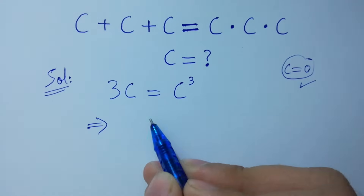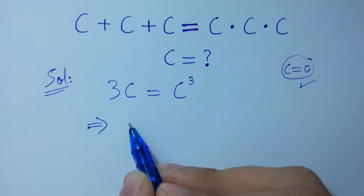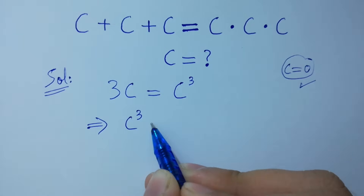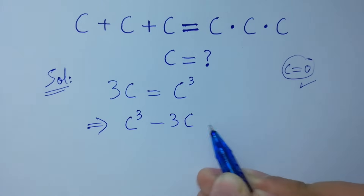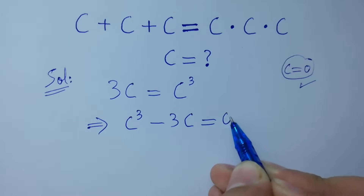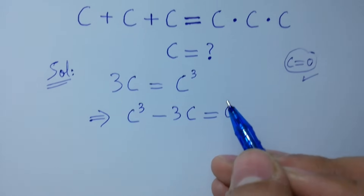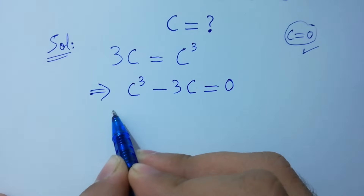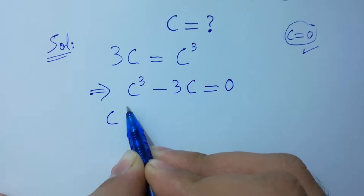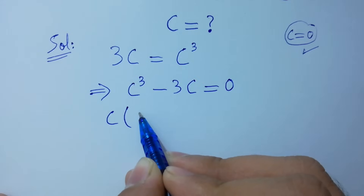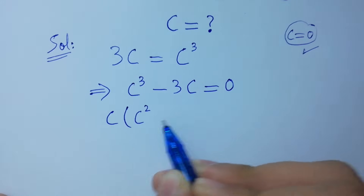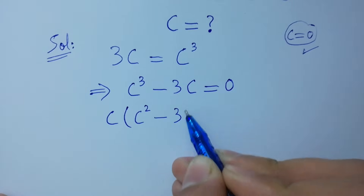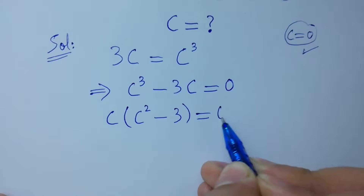This is the same as c cubed minus 3c equal to 0. Since c is common, we factor it out to get c times (c squared minus 3) equal to 0.